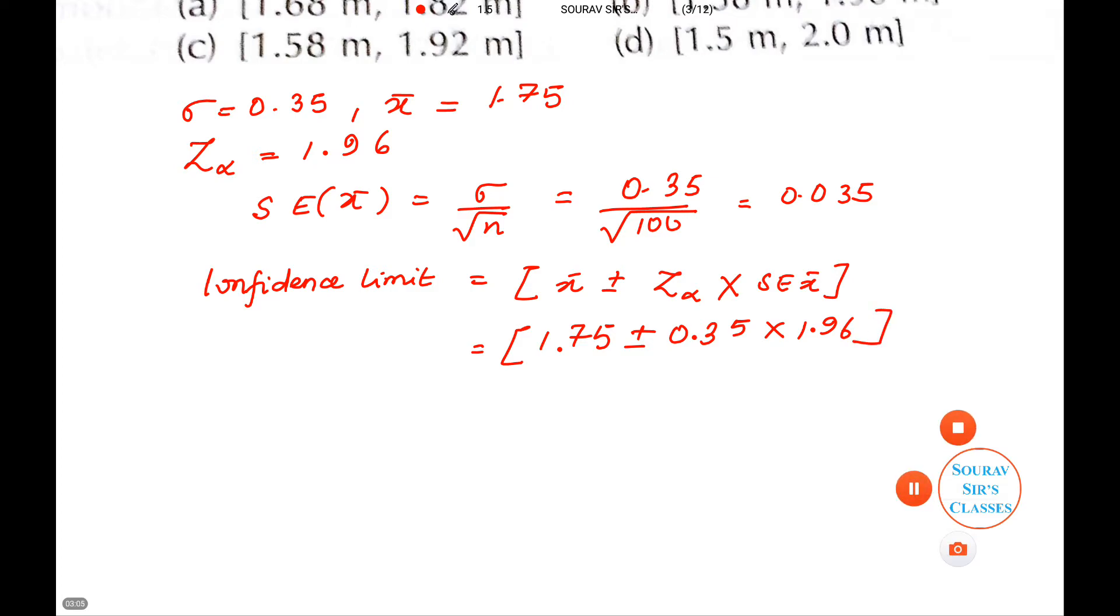Let me make the alteration. It will be 0.035. We will get a value that will be 1.75 plus minus 0.0686 and ultimately we will get the value to be 1.68 if it is minus or it will be 1.82 meter. This will be the answer.